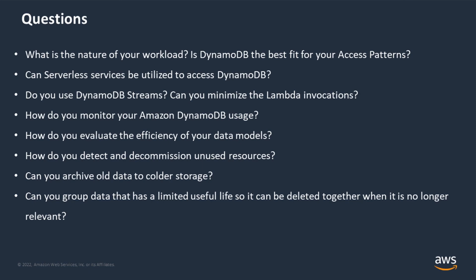Next, how do you evaluate the efficiency of your data model? We talked about a lot of design decisions to improve efficiency, and this question is about how you evaluate efficiency once you've implemented your application. One way to do that is inspecting the returned consumed capacity metric, which can optionally be returned when you make API calls. Next is how you detect and decommission unused resources — leverage CloudWatch to identify resources that are no longer being used and could be deleted to improve your sustainability footprint. How do you archive data to colder storage? Using TTL to expire data is an efficient way to delete data — it doesn't consume write capacity units on your table. We can pick up this expired data on stream and move it to S3 to maintain a copy in colder storage.